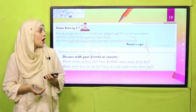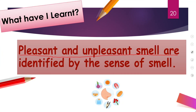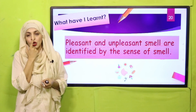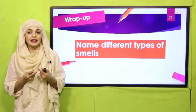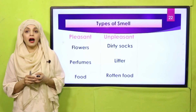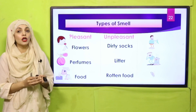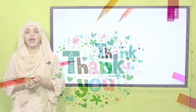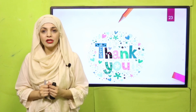So what have we learned today? Pleasant and unpleasant smells are identified by the sense of smell. Good smells and bad smells - you sense them from your nose, which has the sense of smell. Pleasant smells include flowers, perfumes, and good food. Unpleasant ones are dirty socks, litter, and rotten food. I hope you enjoyed the video. Complete your homework, keep everyone around you safe. Have a good day, Allah Hafiz.